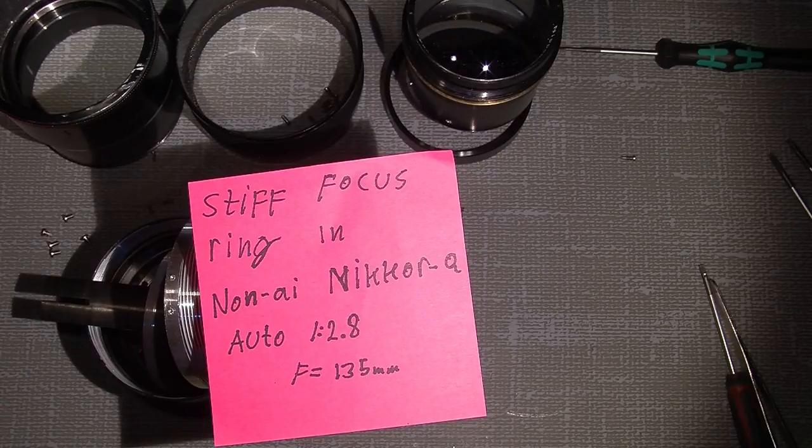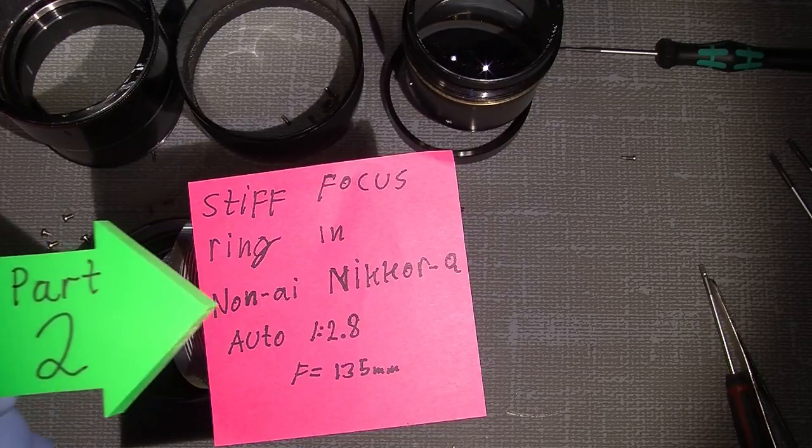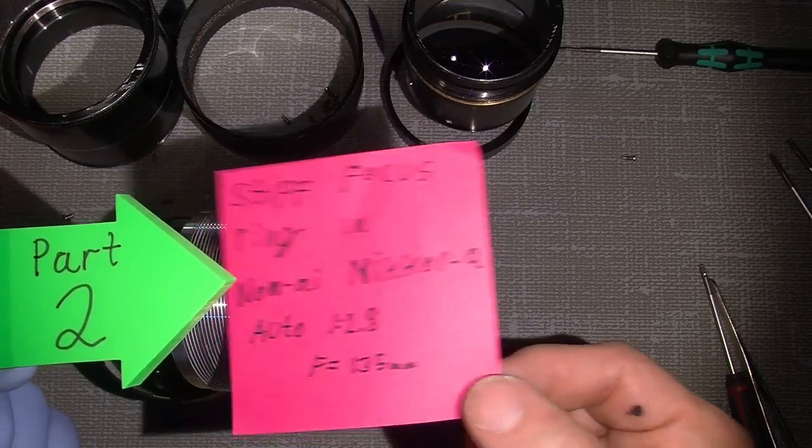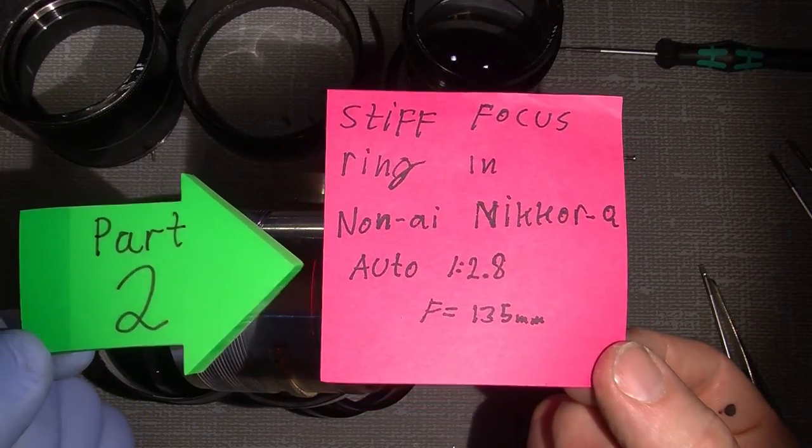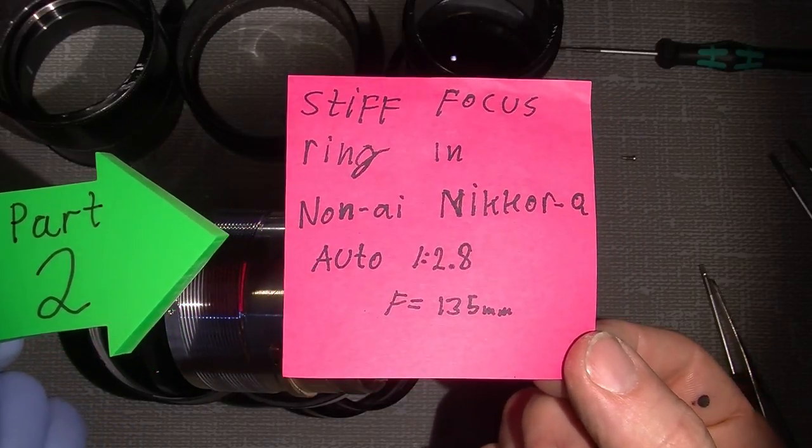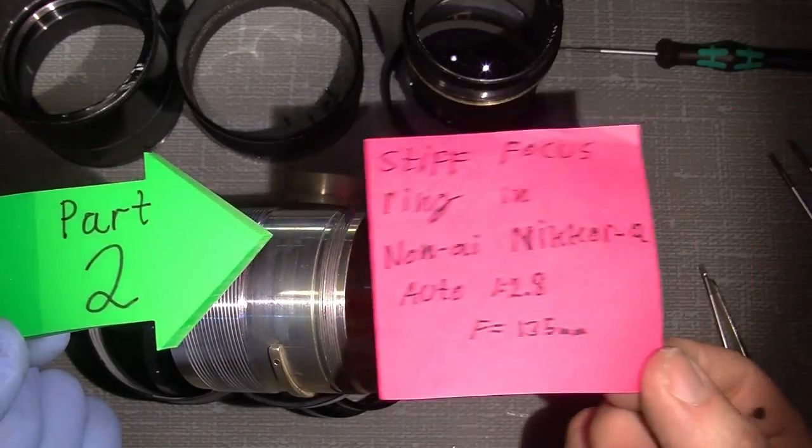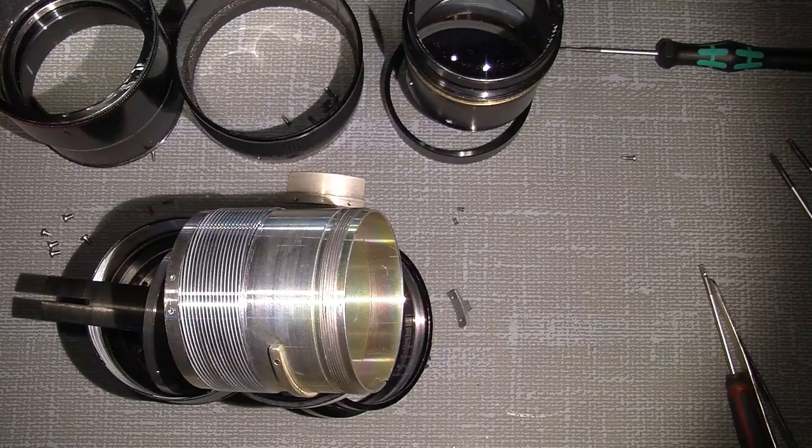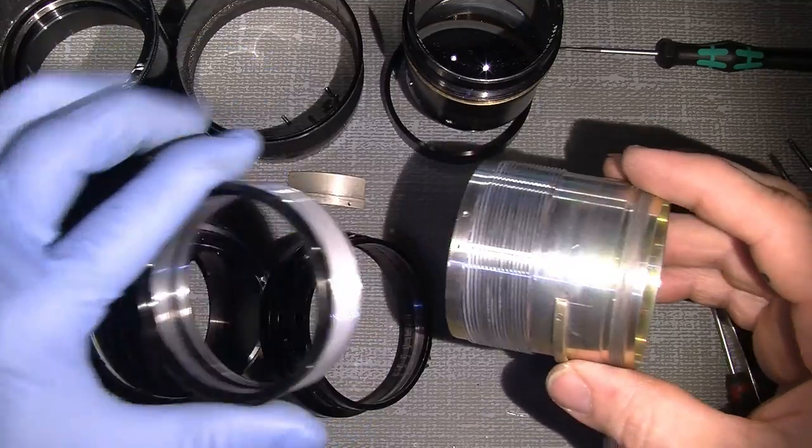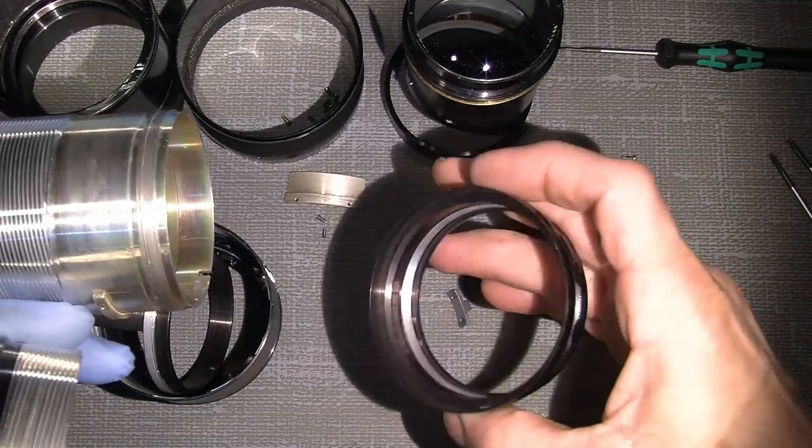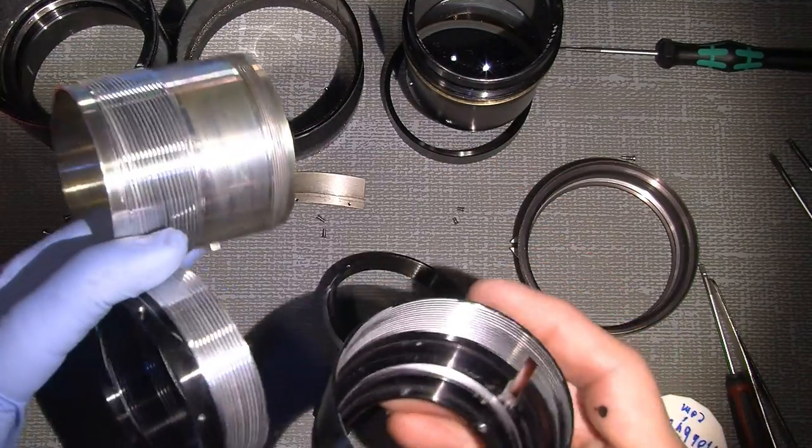Hello again and welcome back to the second part of the stiff focus ring in the non-IA Nikkor Q Auto 2.8 135mm. Now it's time to re-lubricate the focus thread. Here you see all those parts which I have tried to clean as best as possible.